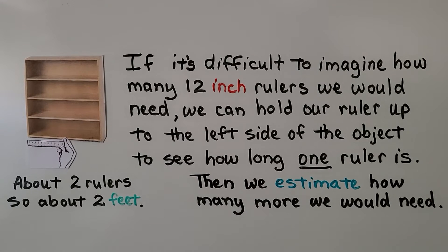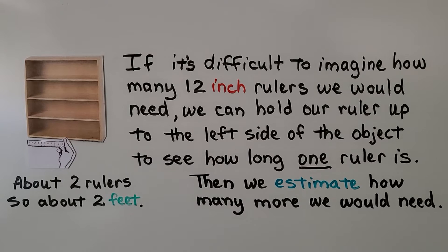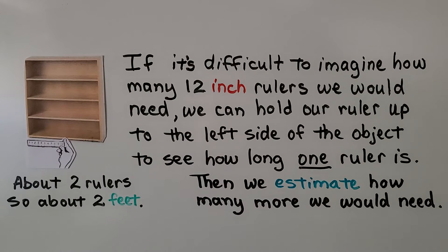If it's difficult to imagine how many 12-inch rulers we would need, we can hold our ruler up to the left side of the object, like this, to see how long one ruler is. Then we estimate how many more we would need. If this is one ruler, we could probably fit another ruler here. That would be about two rulers, so it's about 2 feet.